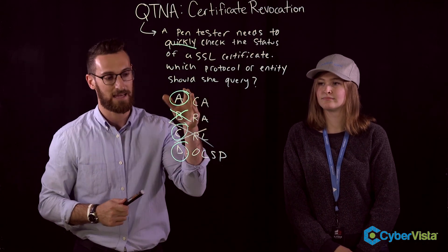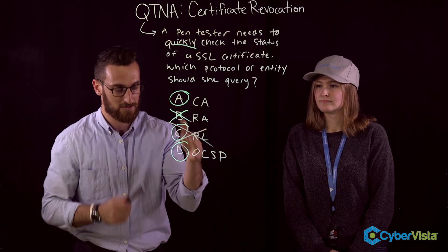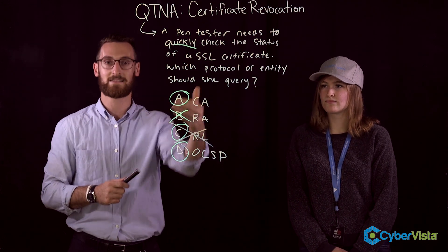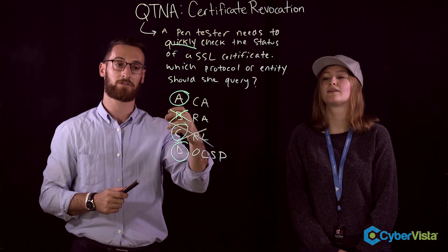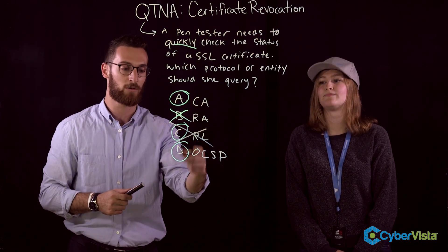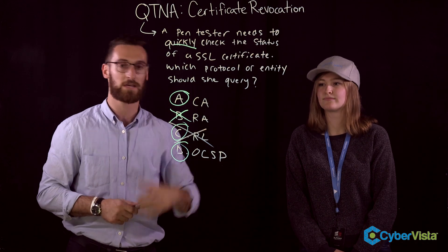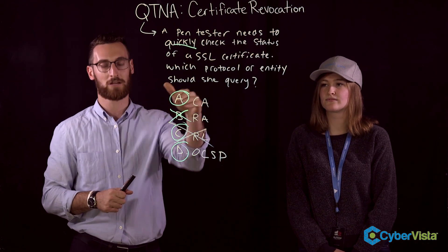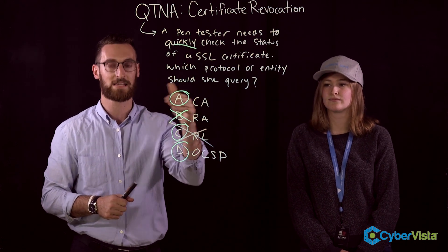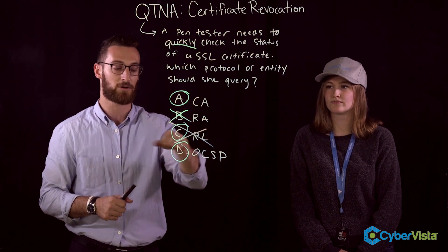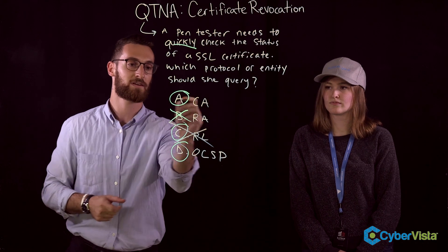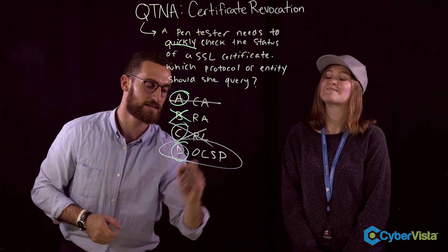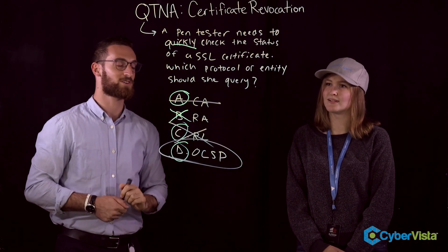Now, D is the right answer here, not A, because the CA is the entity that actually puts out the OCSP and the CRL. But we're not really looking for the entity — we're looking for what they put out. So in this case, D is the better answer choice here.